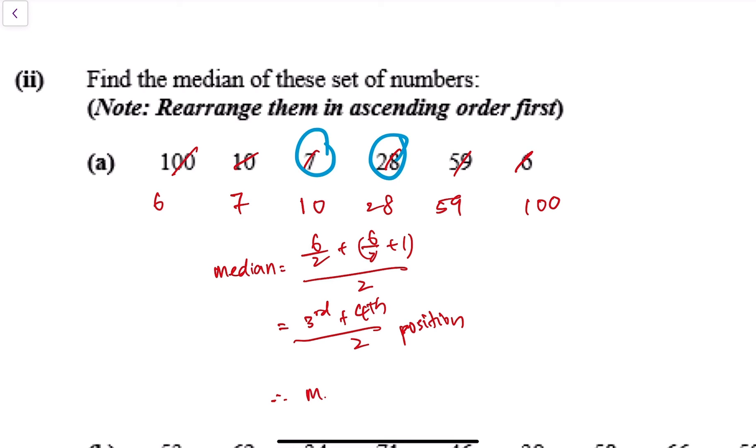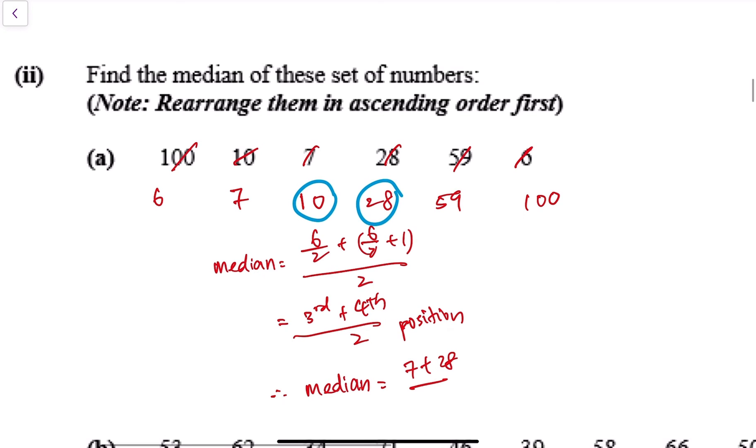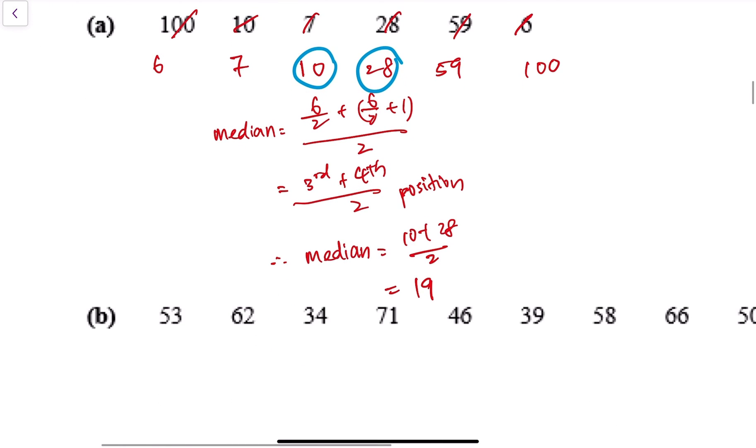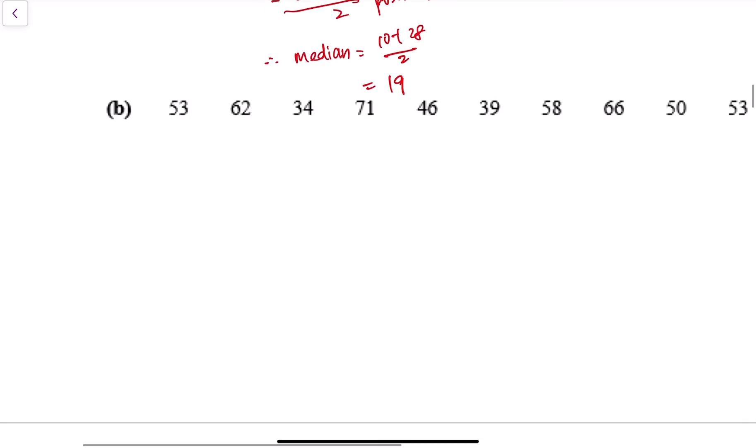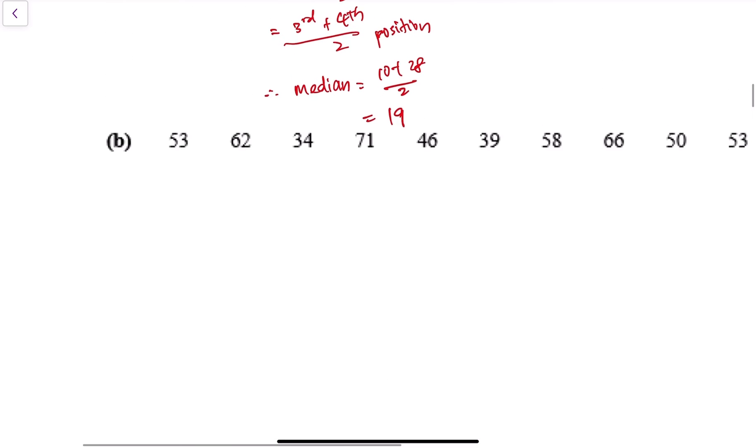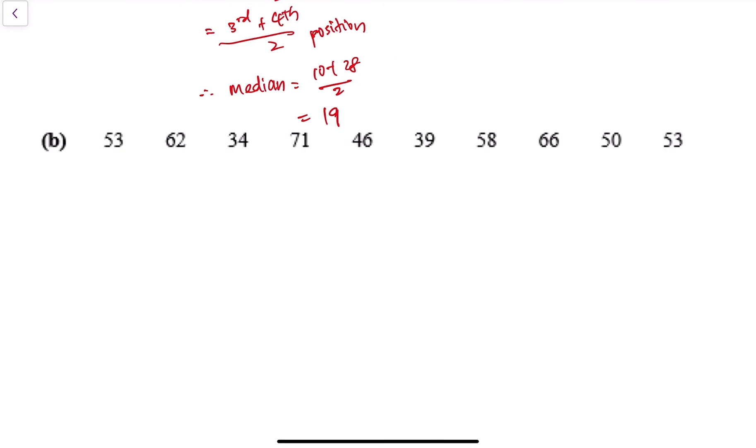So therefore median number is 7 plus... see I circled the wrong number. So the median number is 10 plus 28. Okay, I also will sometimes accidentally, although I write it down, but I still go and circle the wrong line. Apologies for that. Median is equal to 19. Can you try and attempt to do part B on your own? In the next video, I'll show you the answer for part B. Thank you.